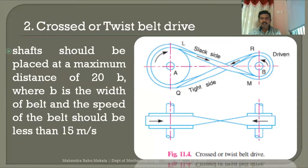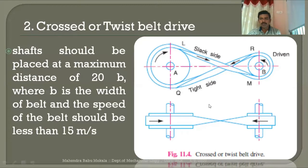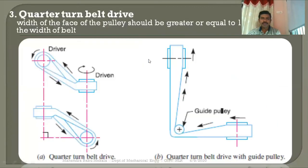Due to the crossing of the belt, there is a chance of rubbing, which causes belt failure. Therefore, there is a limitation: the shaft should be placed at a maximum distance of 20 times the belt width. Additionally, the speed of the belt should be less than 15 meters per second. These are the two key conditions when selecting a cross belt drive. Depending on the required direction of rotation of the machine shaft, you can select either open belt or cross belt drive.